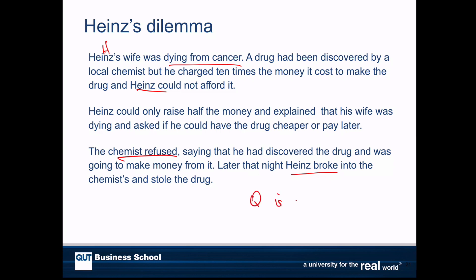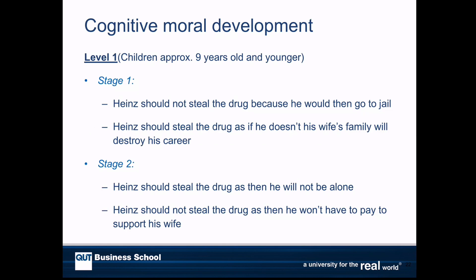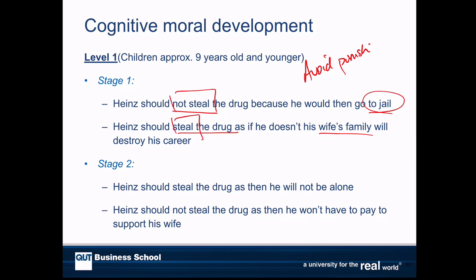The question is: is stealing the drug ethical? What we're interested in is the reasoning. Level one, stage one was about avoiding punishment. So if the rationale is that Heinz shouldn't steal the drug because he'll go to jail, or that he should steal the drug so his wife won't take revenge on him — in both cases, the action is driven by avoiding a negative consequence. Stealing or not stealing is irrelevant; it's the avoiding punishment that marks this as stage one, level one.